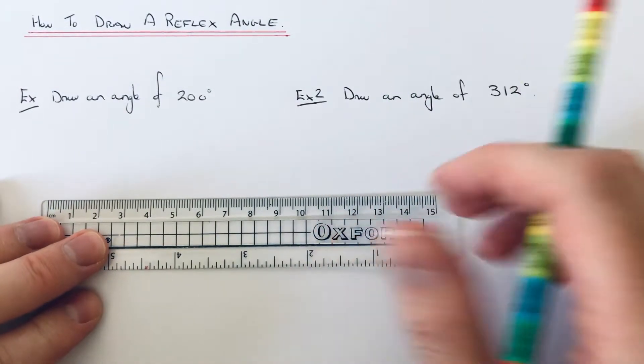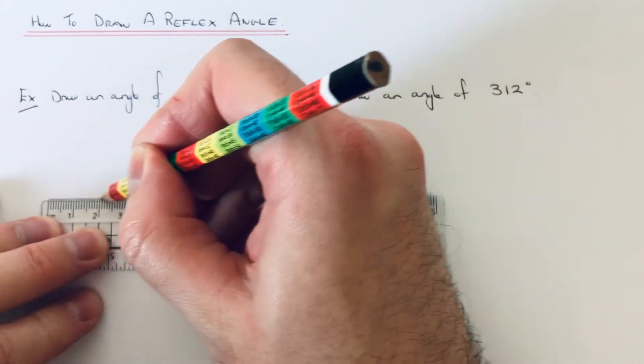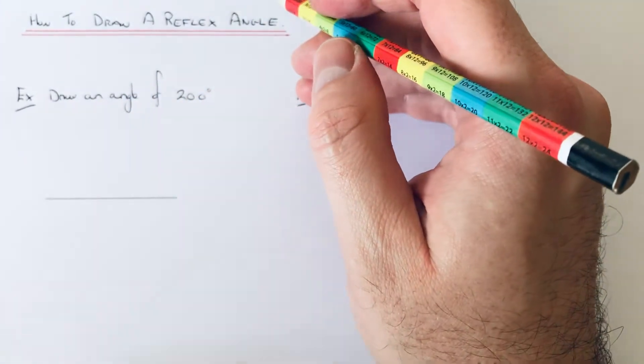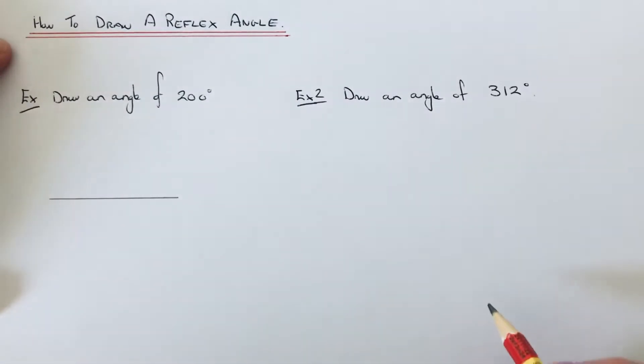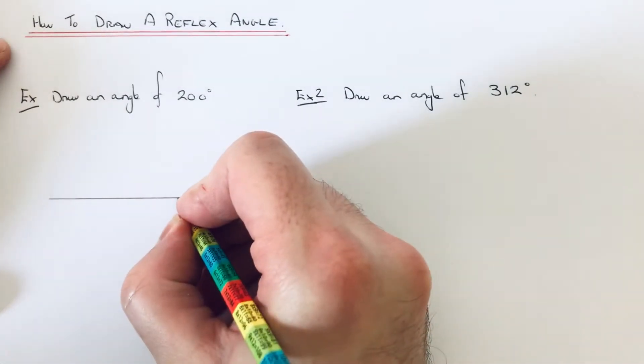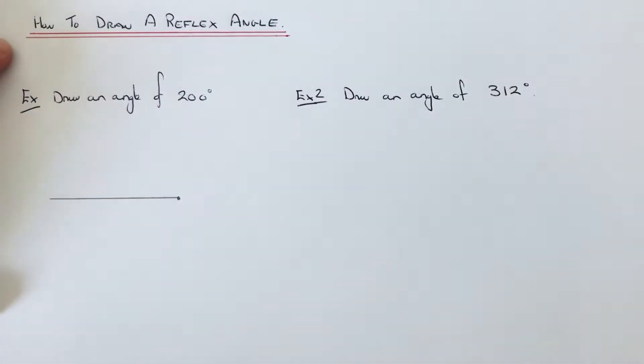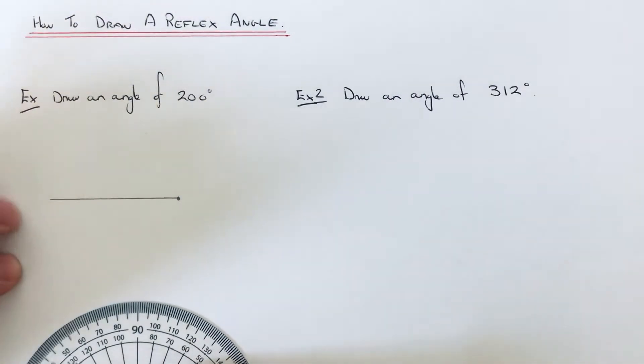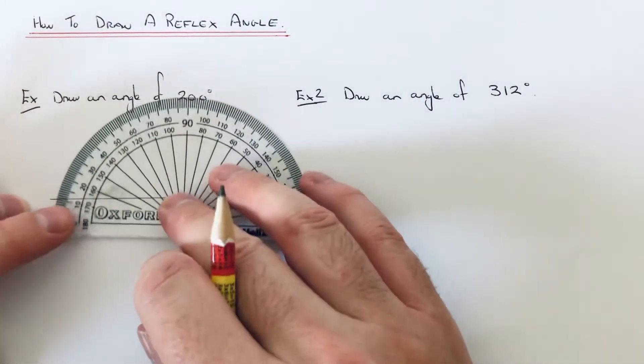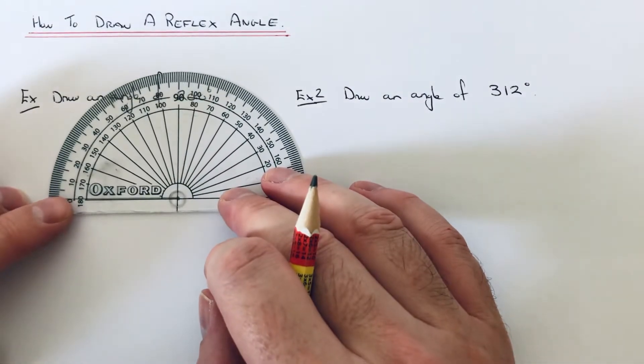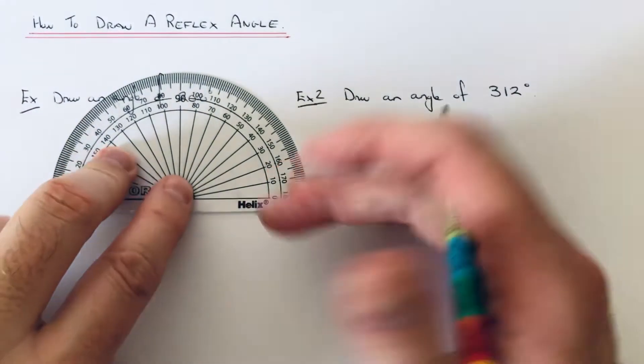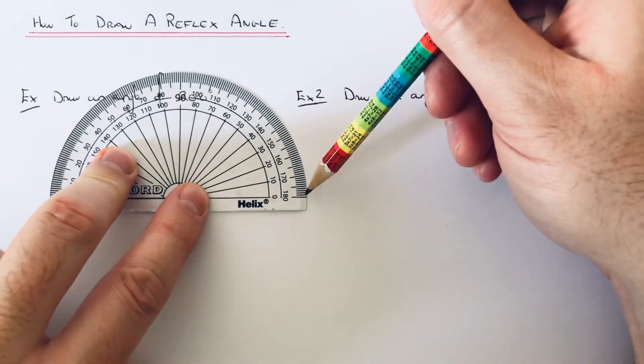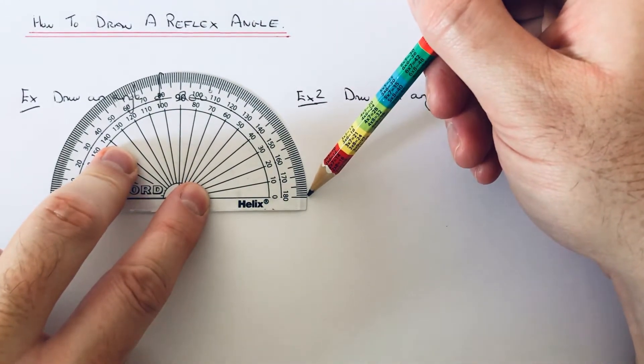I recommend doing a five centimeter line. Give yourself plenty of room on your paper. We're going to choose the right hand side of the line because it's much easier to do, because you use the outside scale on the protractor.